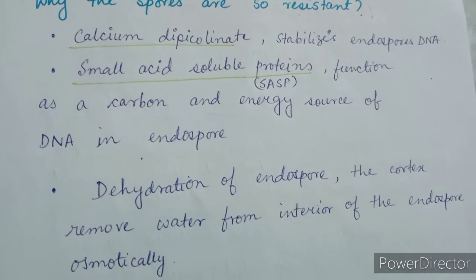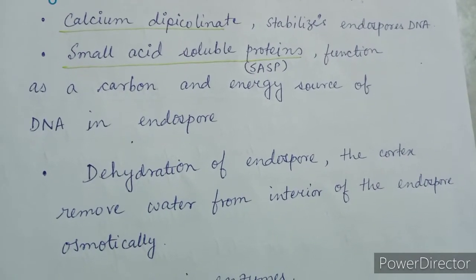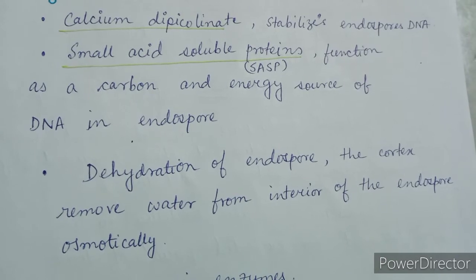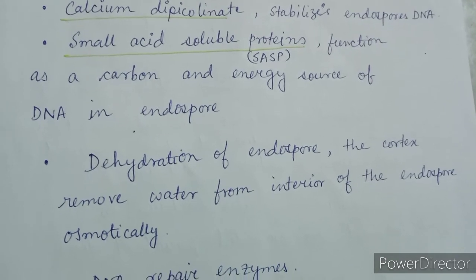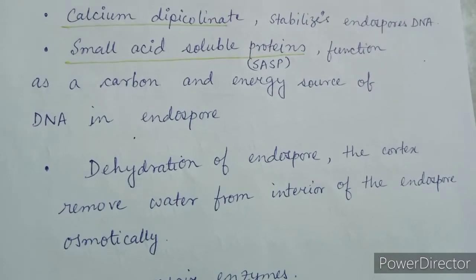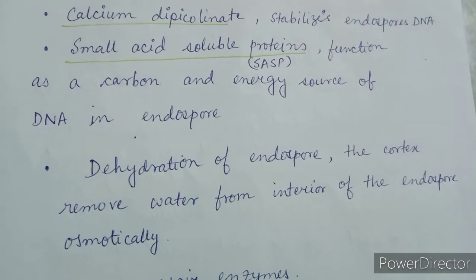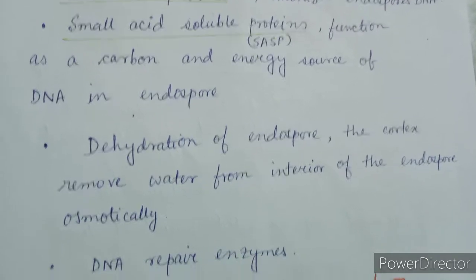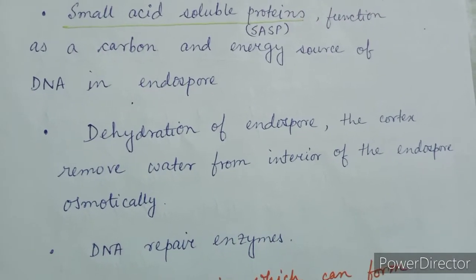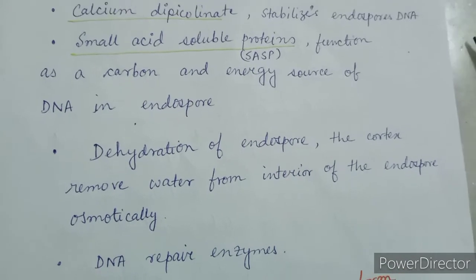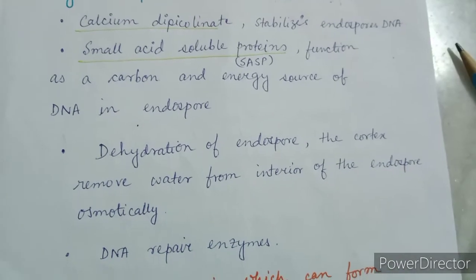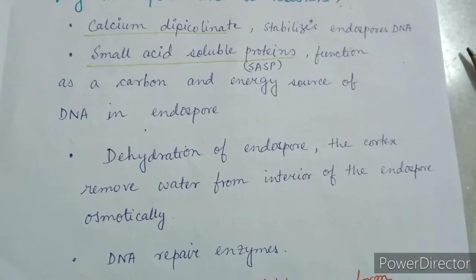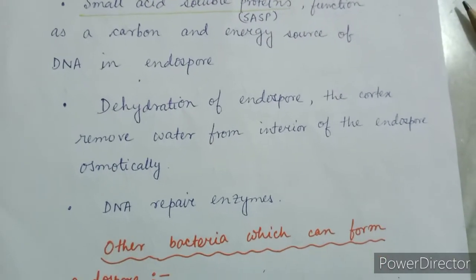Another reason is dehydration of the endospore. The cortex removes water from the interior of the endospore osmotically, and that is why dehydration makes the endospore so resistant. DNA repair enzymes are also a factor. These are the four main factors why endospores are so resistant.